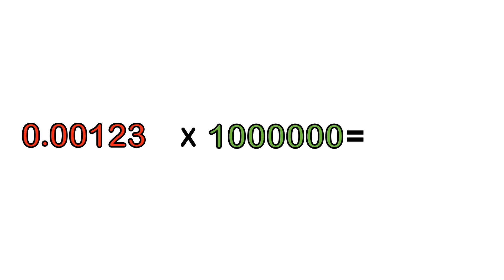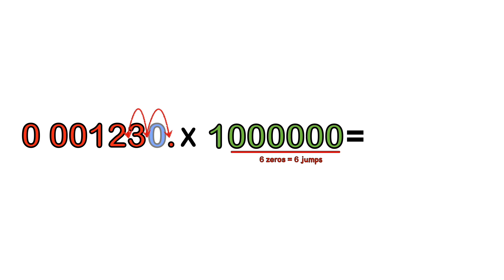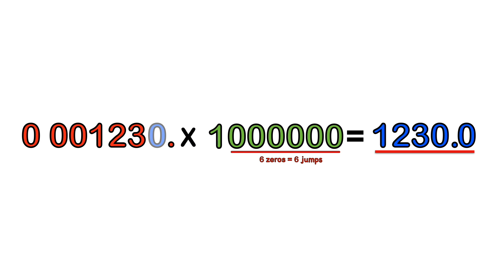What if we wanted to do 0.00123 times a million? The same technique applies — no matter how many zeros we have, always count the number of zeros first. Since we have six zeros, we make the decimal point jump to the right six times: one, two, three, four, five, and a blank sixth jump over nothing, so we put a zero there as a space filler. Now we read all the non-zero numbers before the point: 1,230. Since there's nothing after the decimal, it's 1,230.0.